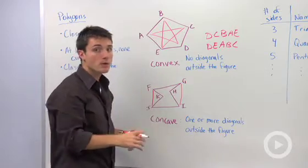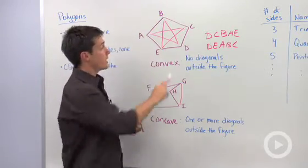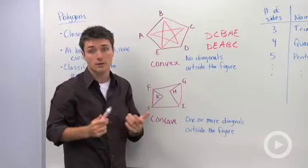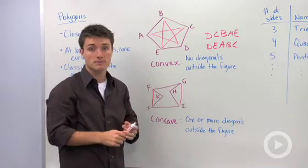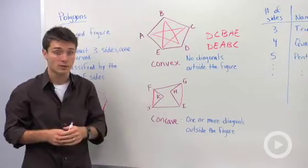So when you're naming a polygon, pick any vertex and go in a consecutive order, either counterclockwise or clockwise. Remember that when you're being asked on your true and false questions.